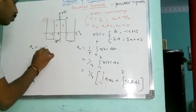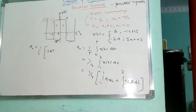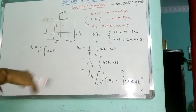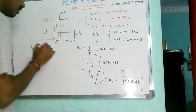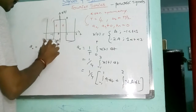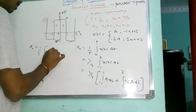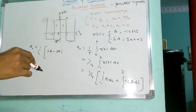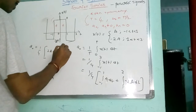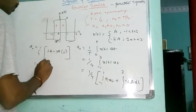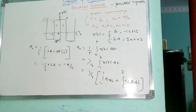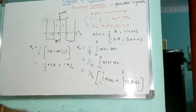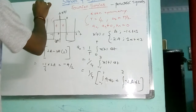This is 2A. So 1 plus 1 is 2. That value is minus 2A into 3 minus 1, that is 2. That is minus 1 by 4 into 2A, which is minus A by 2. A naught has a value of minus A by 2. Keep it aside — A naught is minus A by 2.